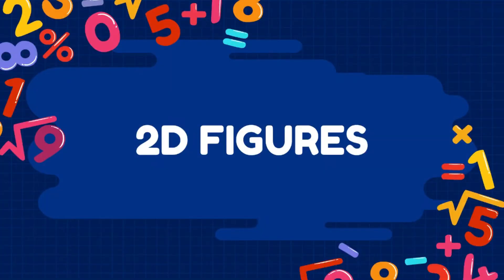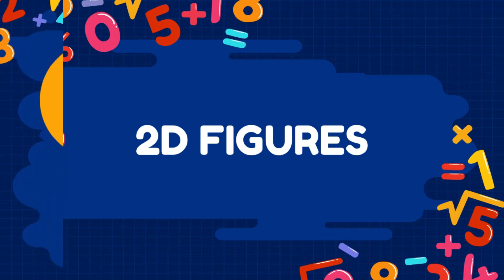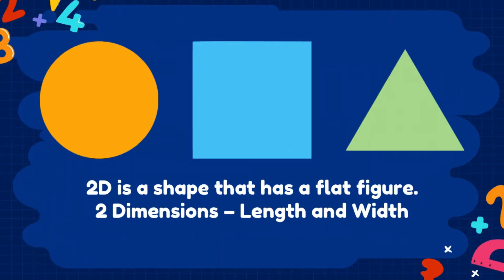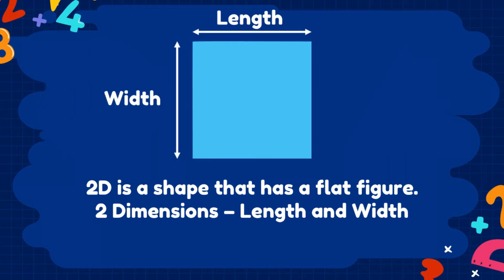Good day everyone, for today we will talk about 2D figures. What is a 2D figure? 2D is a shape that has a flat figure, meaning it has only two dimensions, the length and the width. The length is the horizontal part of a shape while the width is the vertical part.